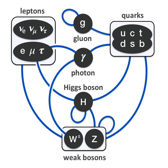After the neutral weak currents caused by Z boson exchange were discovered at CERN in 1973, the electroweak theory became widely accepted, and Glashow, Salam, and Weinberg shared the 1979 Nobel Prize in Physics. The W± and Z⁰ bosons were discovered experimentally in 1983, and the ratio of their masses was found to be as the Standard Model predicted. The theory of the strong interaction — quantum chromodynamics (QCD) — acquired its modern form in 1973–74 when asymptotic freedom was proposed. The term 'Standard Model' was first coined by Abraham Pais and Sam Treiman in 1975.